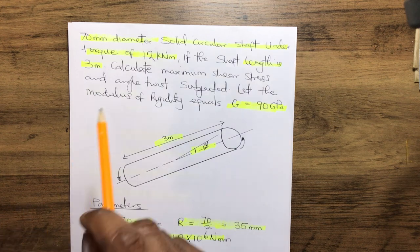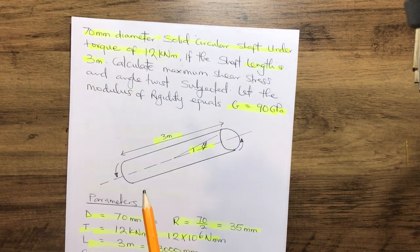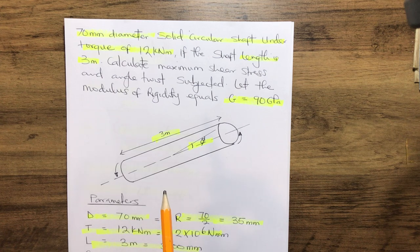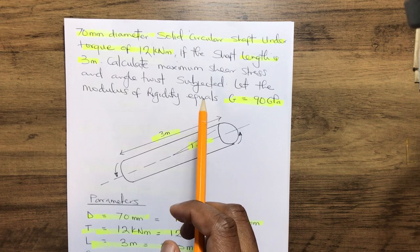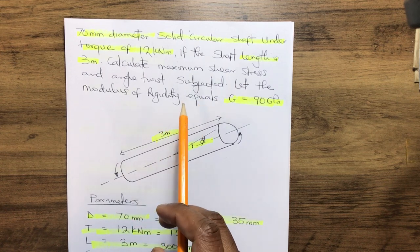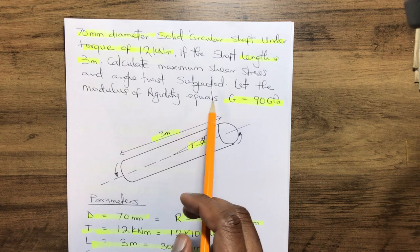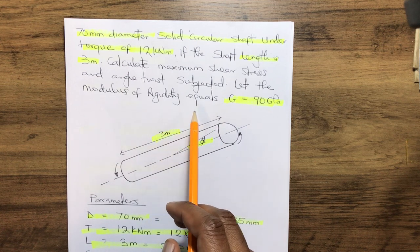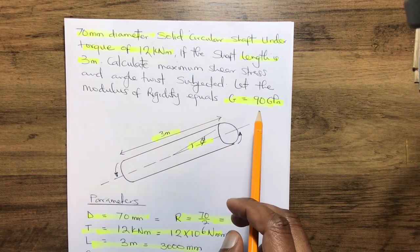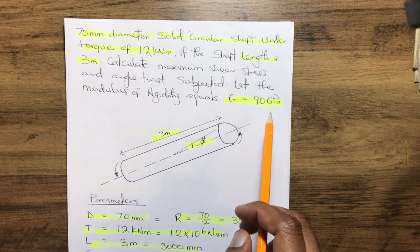Once again: a 70 millimeter diameter circular solid shaft under a torque of 12 kilonewton meter. If the shaft length is 3 meters, calculate the maximum shear stress and the angle of twist. Let the modulus of rigidity G equal 90 gigapascals.